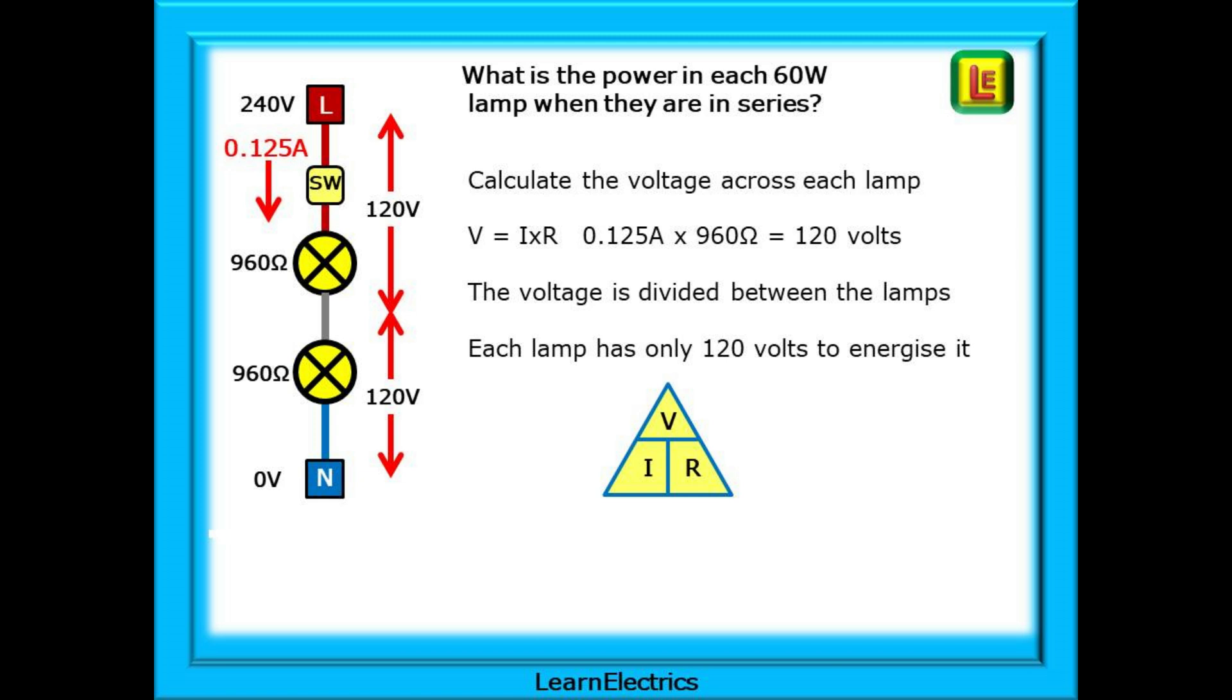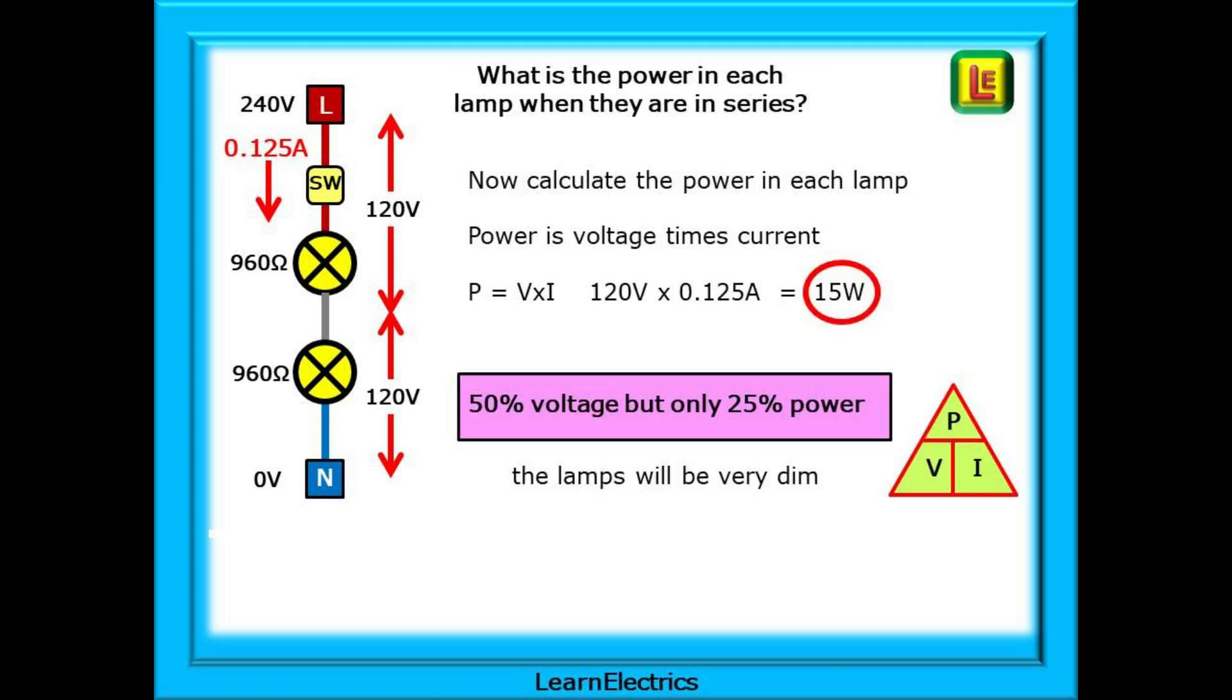This means that each lamp has only 120 volts to energize it. Next, calculate the power in each lamp. Power is voltage times current. So we have P equals V times I, which is 120 volts multiplied by 0.125 amps to give 15 watts of power for each lamp. So we have just 50% of the voltage but only 25% of the power. The voltage has dropped by half but the power has dropped by a half of a half. The result, very dim lights. And this is what you will see as you walk into a room where the lamps have been incorrectly wired in series.